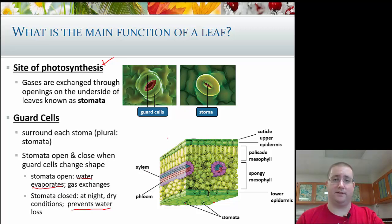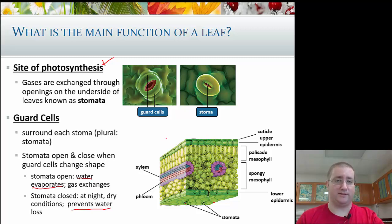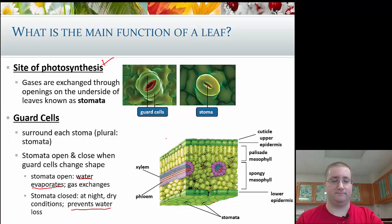That's it for this video. There is a fourth plant organ — the flower — which deals with reproduction and will be covered later, since not all plants have flowers. This covers the main details you need to understand about plants for this part of the course.